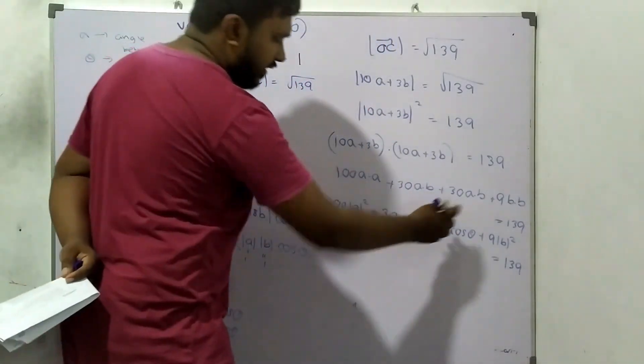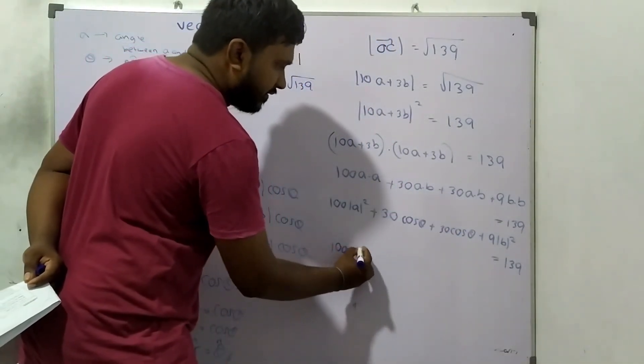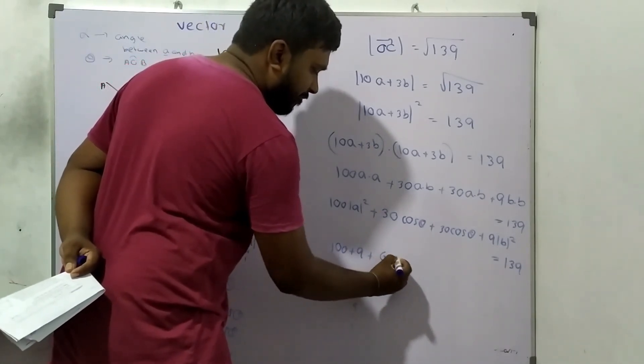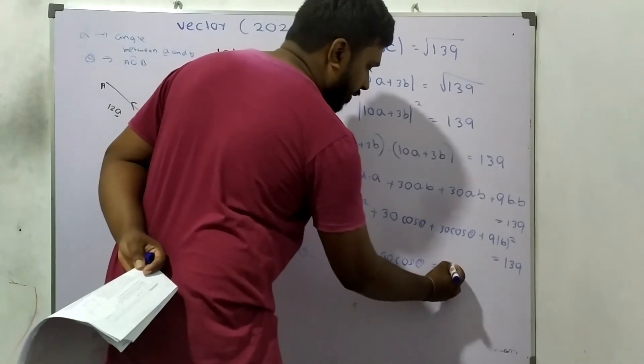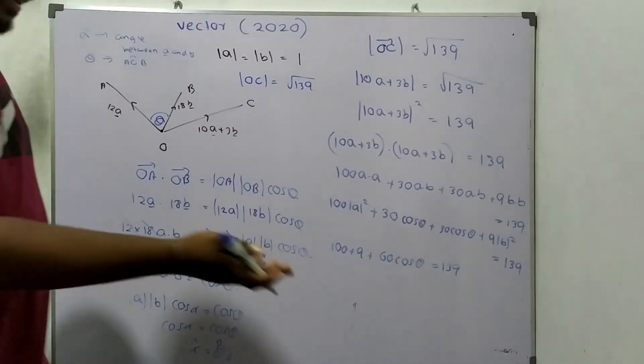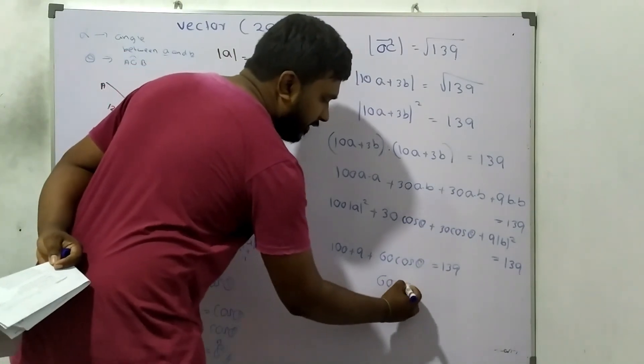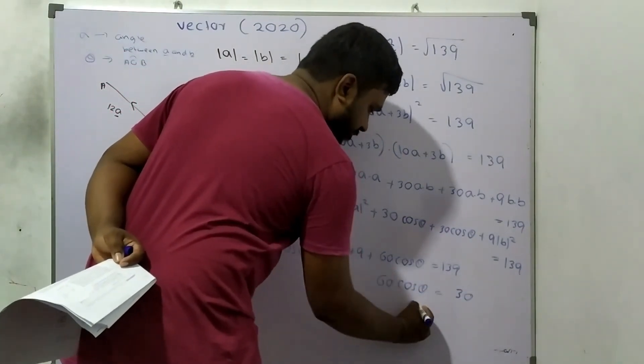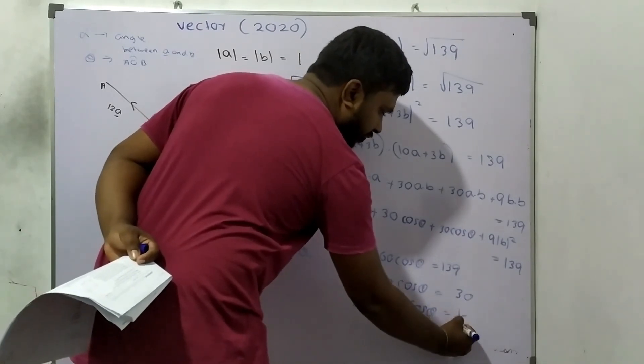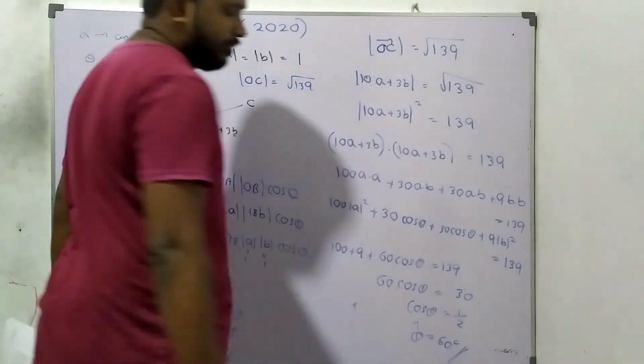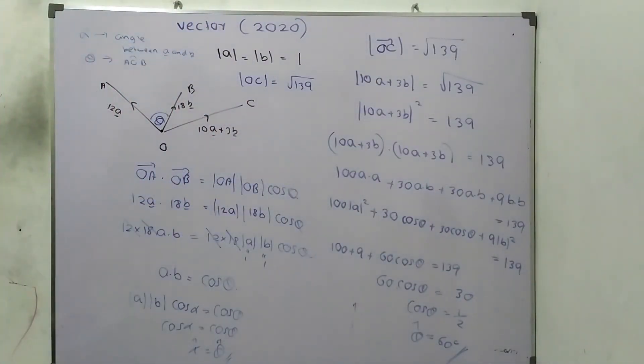100 plus 9 plus 60 cos theta equals 139. This is 109 plus 60 cos theta equals 139. So 60 cos theta equals 30, cos theta equals half, theta becomes 60 degrees. That is what they expected in the question.